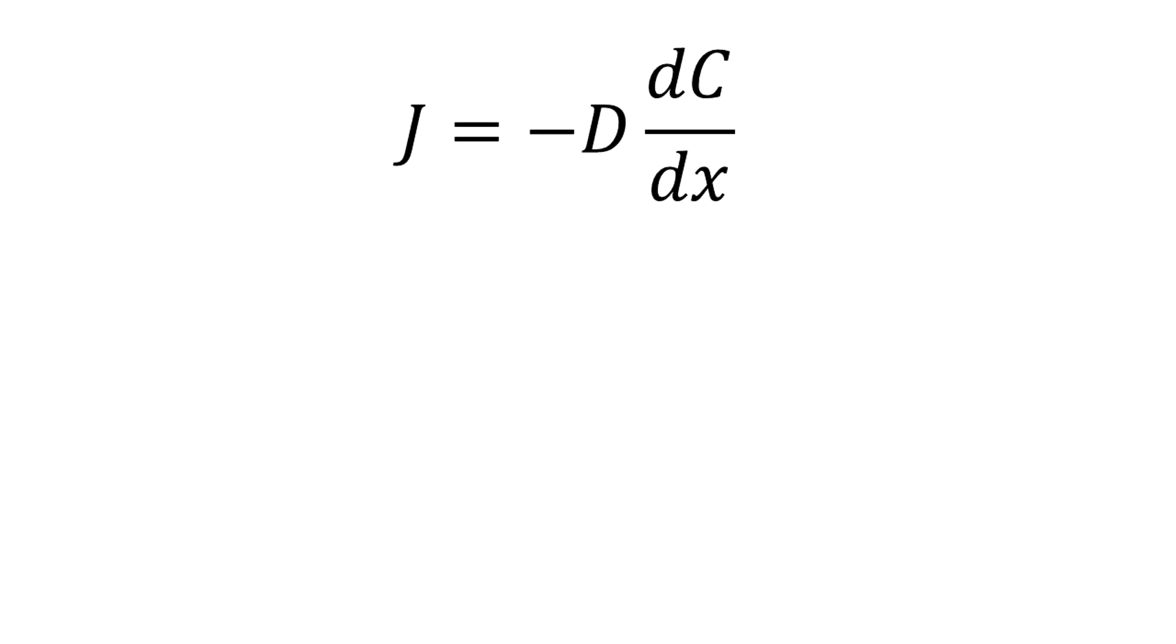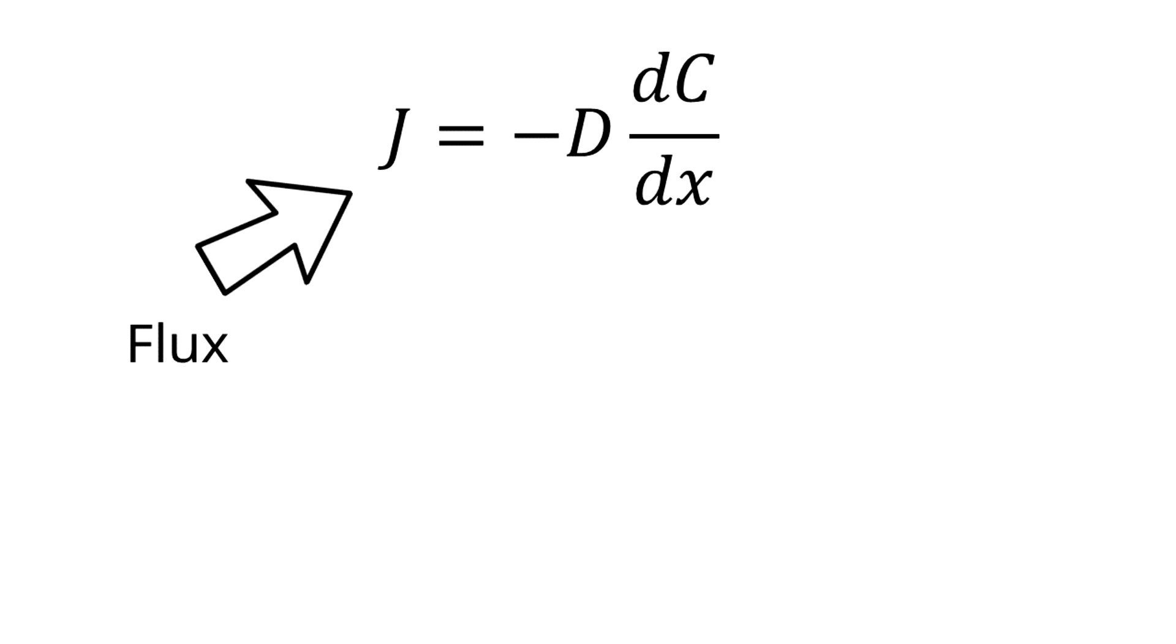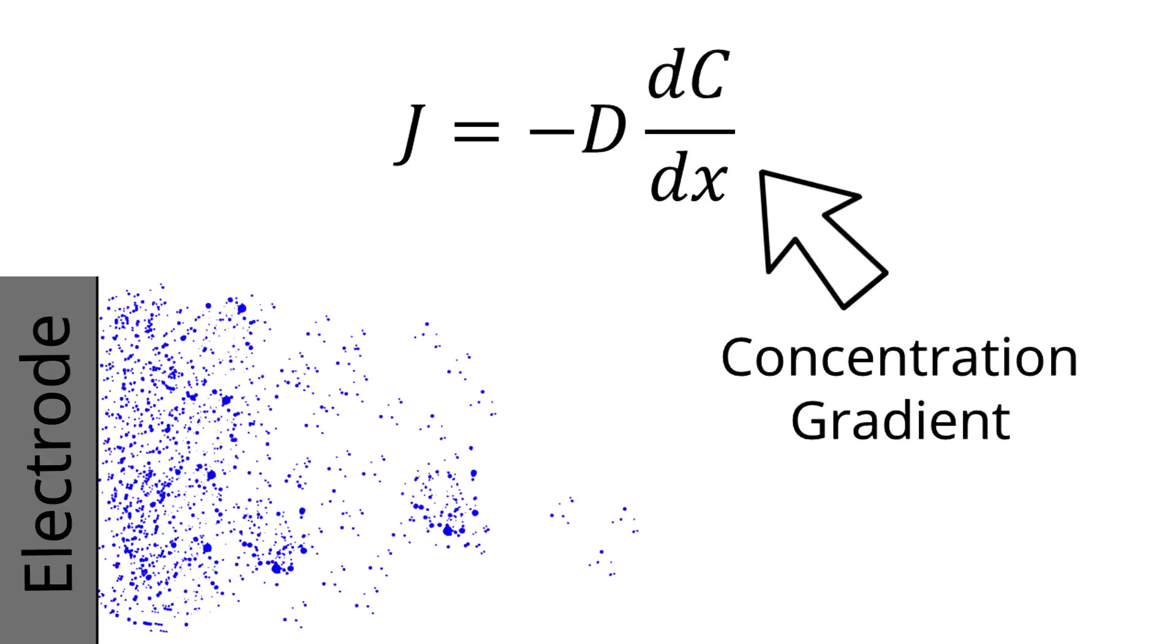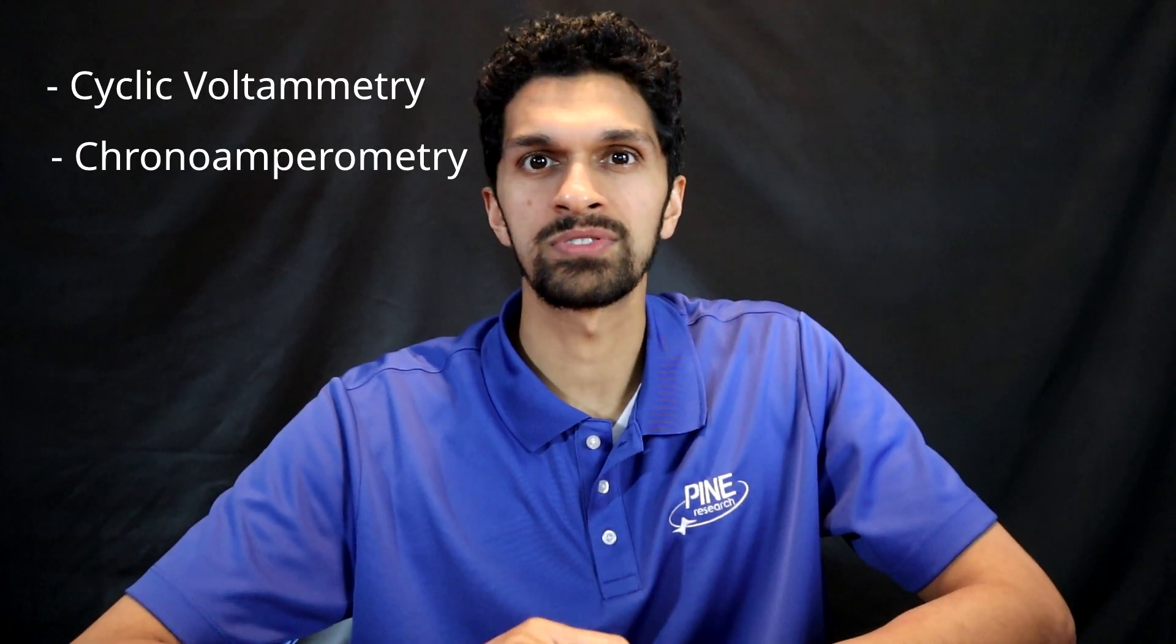The diffusion coefficient is a proportionality constant that relates the flux of molecules due to molecular diffusion to a change in the concentration gradient. The diffusion coefficient is used in many fields of science, but for electrochemists it's a particularly useful parameter and can be determined using a variety of electrochemical techniques such as cyclic voltammetry, chronoamperometry, ultramicroelectrodes, etc.